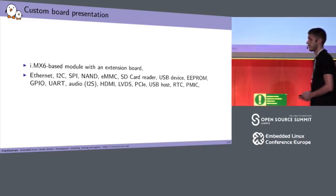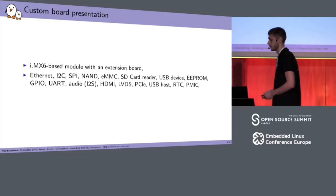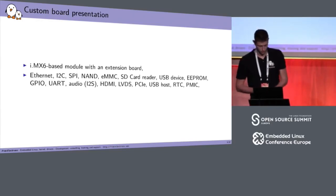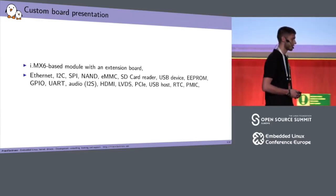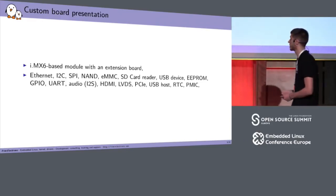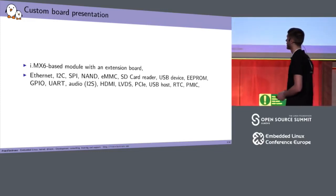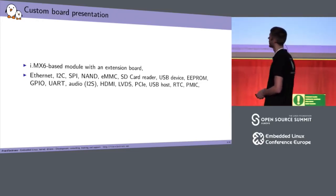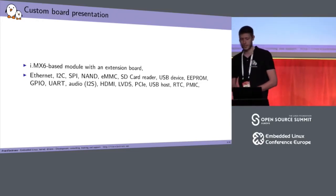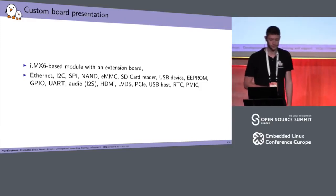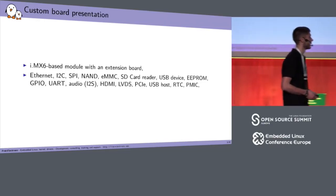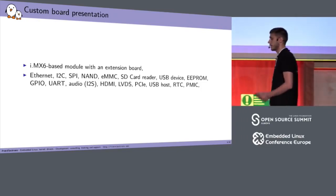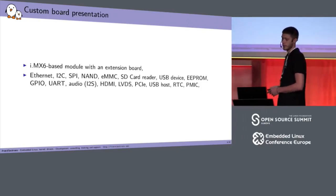The custom board I ported U-Boot and Linux on is an iMX6 Solo or Quad — two boards: a module with an extension board. It has Ethernet, I2C, SPI, NAND, eMMC, SD card reader, USB device, EEPROM on I2C, GPIO, UART, audio on I2S, HDMI, LVDS, PCIe, USB host, RTC, and PMIC. Everything is supported in Linux and some are supported in U-Boot, though the client didn't want all features.